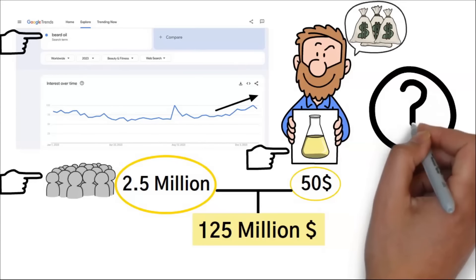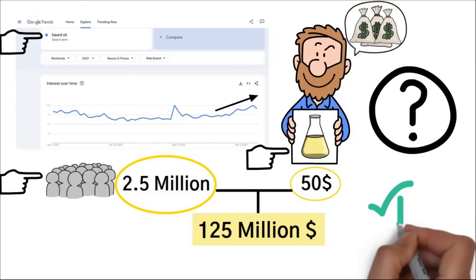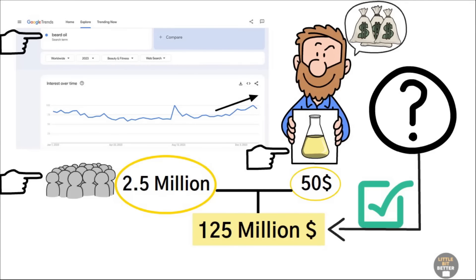In other words, $50 multiplied by 2.5 million equals $125 million. Is this a million-dollar opportunity? Yes. This is a super simple way to see if the idea has a million-dollar potential or not.